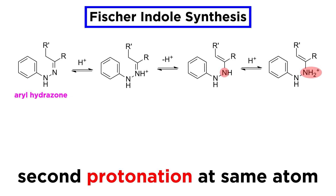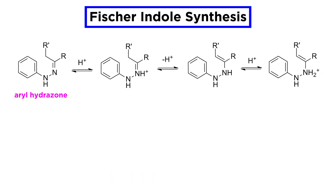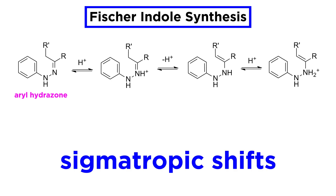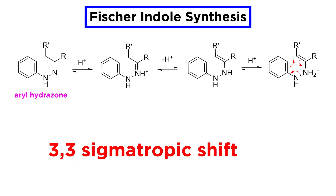Protonation occurs again at the same nitrogen as the first time. We talked about sigmatropic shifts earlier in the series, so if that term is unfamiliar, you may want to refresh your memory with that tutorial. Otherwise, this intermediate will undergo a 3,3-sigmatropic shift, which generates the crucial carbon-carbon bond at the ortho position of the benzene ring.